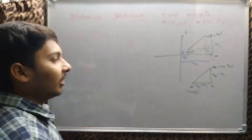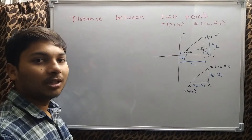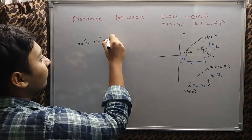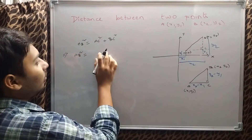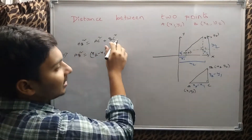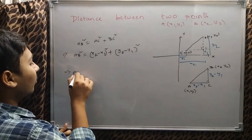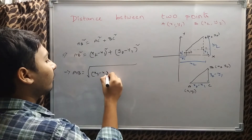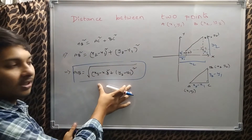So to find the length of AB, we use the Pythagorean theorem, since this is a right angle triangle. Hypotenuse squared equals the sum of squares of the other two sides. Therefore, AB² = AC² + BC² = (x2 − x1)² + (y2 − y1)². So AB = √((x2 − x1)² + (y2 − y1)²). This is the formula to find the distance between two points (x1, y1) and (x2, y2).